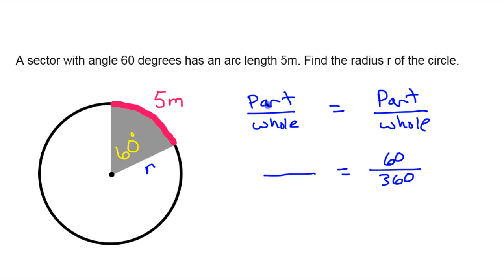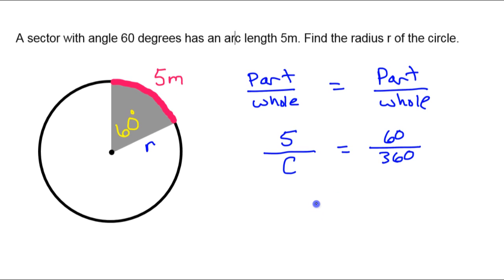Now, on this side, I'm going to do part over whole length. So here we have the partial length, just one little piece of the length of the circle. So I'm going to put that up here. Now, over the whole length, the entire length of the circle is called the circumference of the circle. So I'm going to put a C there for circumference.